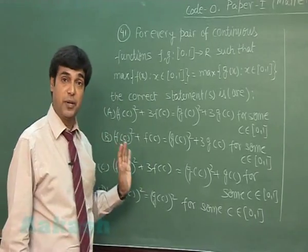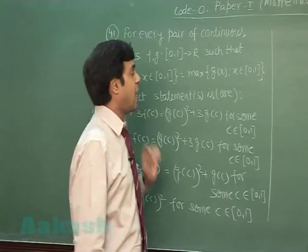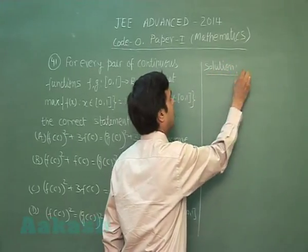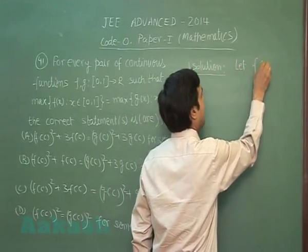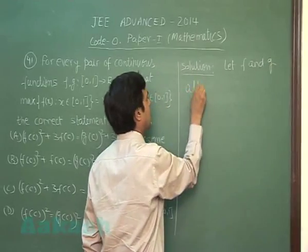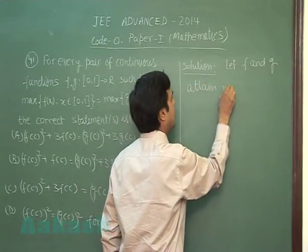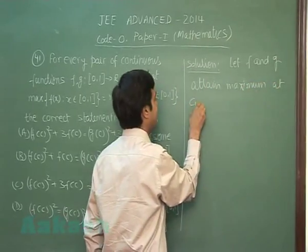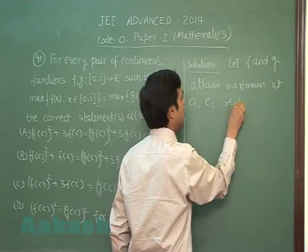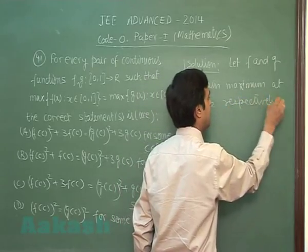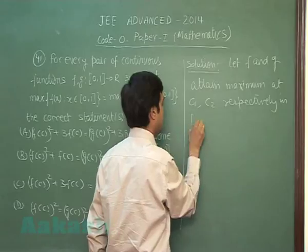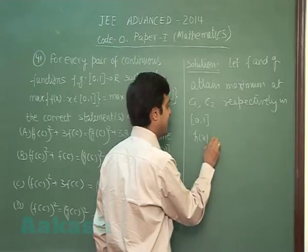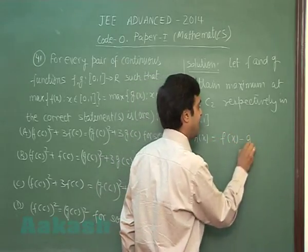Let's start. Let f and g attain maximum at c₁ and c₂ respectively in [0,1]. Let's assume a function h(x) given by f(x) - g(x).